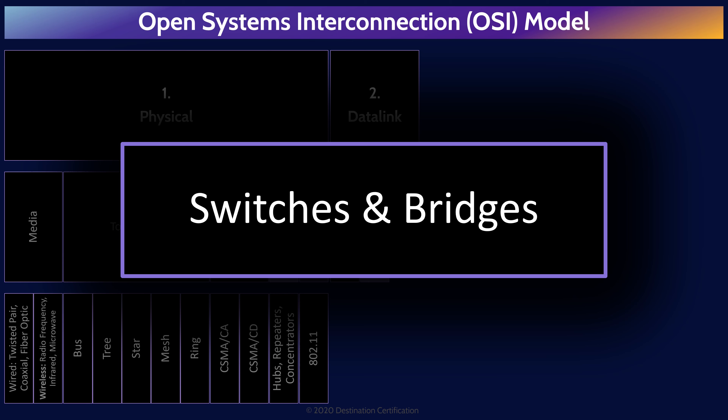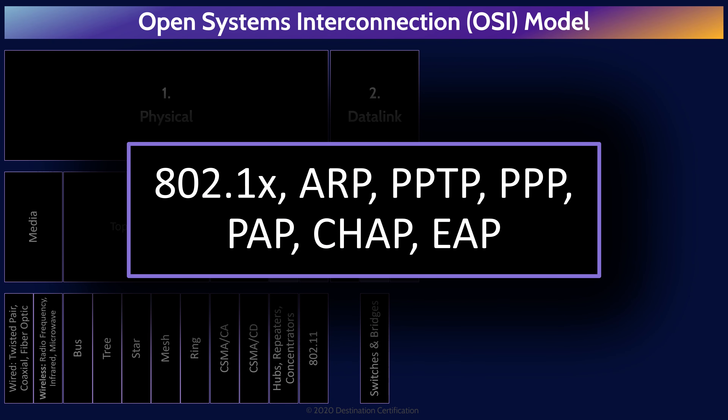The Layer 2 protocols you should know about: 802.1x, which is used for authenticating network devices to a network — a protocol used for network access control. ARP, Address Resolution Protocol, translates an IP address down to a MAC address. There is also RARP, Reverse Address Resolution Protocol, which translates a MAC address up to an IP address. PPTP, Point-to-Point Tunneling Protocol, is used for creating tunnels. PPP, Point-to-Point Protocol, encapsulates IP traffic so it can be transmitted over analog connections, and provides authentication, encryption, and compression. And authentication protocols PAP, CHAP, and EAP.